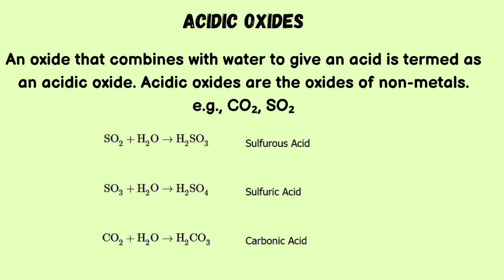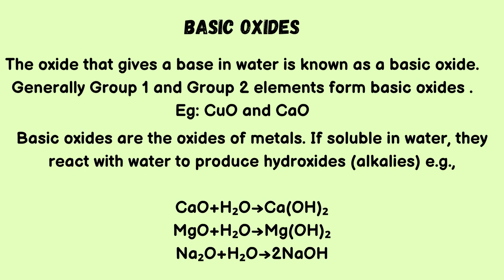Basic oxides: an oxide that gives a base in water is known as a basic oxide. Generally, group 1 and group 2 elements form basic oxides. Examples include copper oxide and calcium oxide. Basic oxides are the oxides of metals; if soluble in water, they react with water to produce hydroxides or alkalis. For example: calcium oxide plus water gives calcium hydroxide; magnesium oxide plus water gives magnesium hydroxide; sodium oxide plus water gives sodium hydroxide.